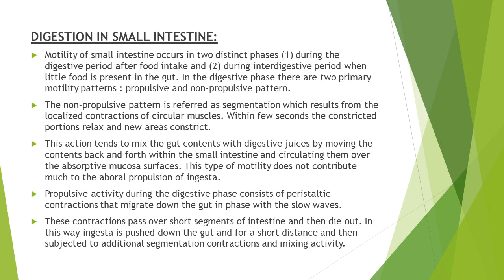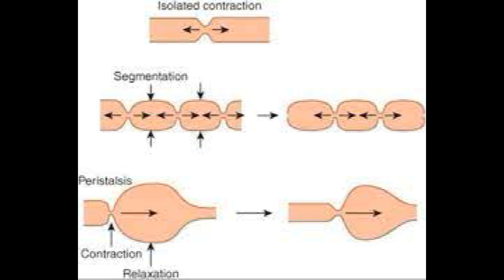Motility in the small intestine may occur directly after the intake of food, which is called the digestive period, or it may occur when little food is present in the gut, called the interdigestive period. The motility of the small intestine after food intake may be of propulsive or non-propulsive nature. The non-propulsive pattern is known as segmentation, resulting from localized contractions of circular muscles. Within a few seconds these contractions relax and new areas constrict, forming different segments; this is referred to as segmentation activity.